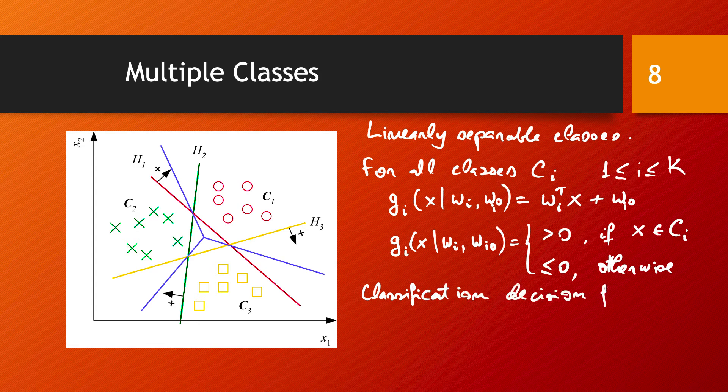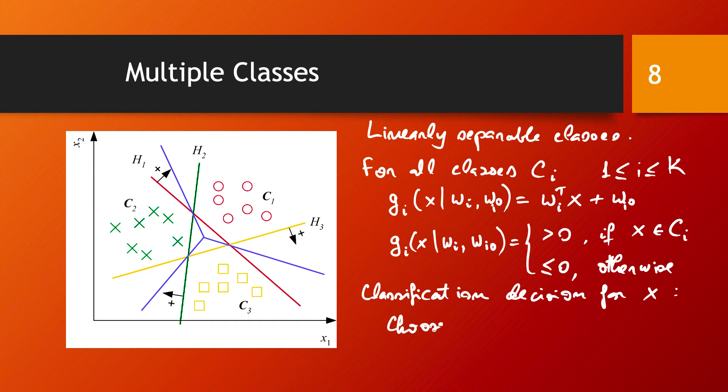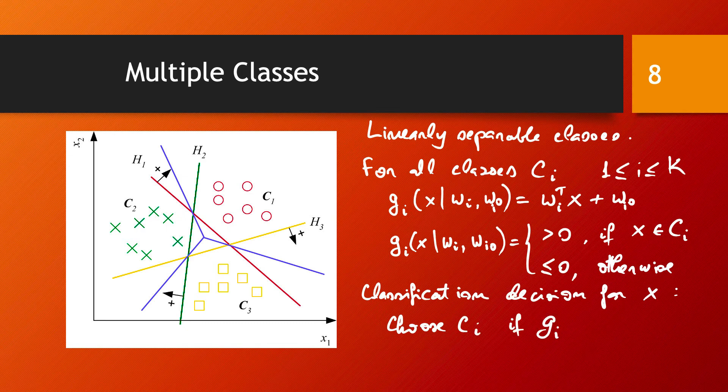So the classification decision for a point x is going to be choose class CI in such a way that gi of x is maximized.